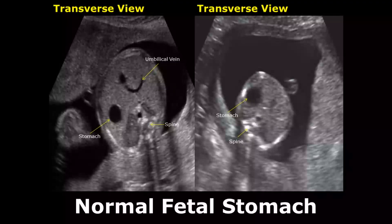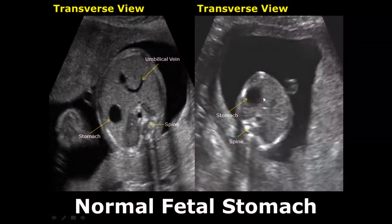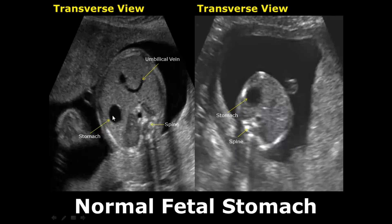The stomach can be visualized around 13 to 14 weeks. It is usually anechoic because it is fluid-filled and has various shapes and sizes. We can see the stomach at the level in which we see the umbilical vein. Here you can see the umbilical vein, and over here you can see the stomach. This is a good level to locate the stomach.